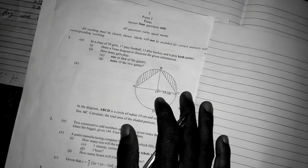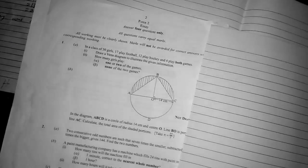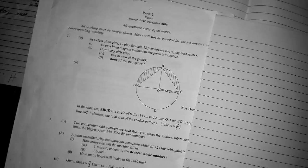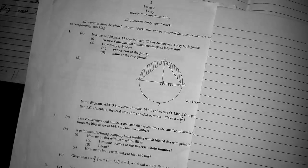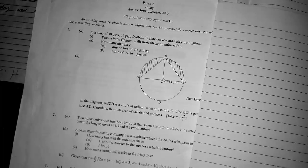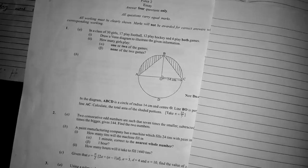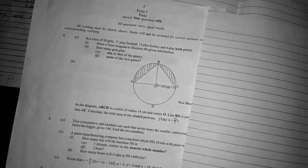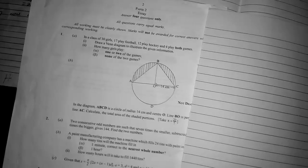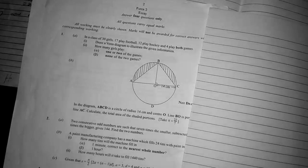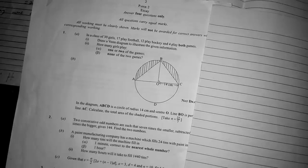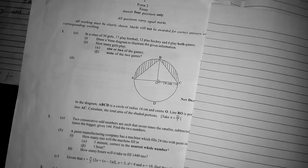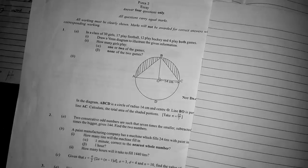Today we have the solution to 2017 BECE Maths paper. Starting from number one, the question says: in a class of 30 girls, 17 play football, 12 play hockey, and 4 play both games. Draw a Venn diagram to illustrate the given information.